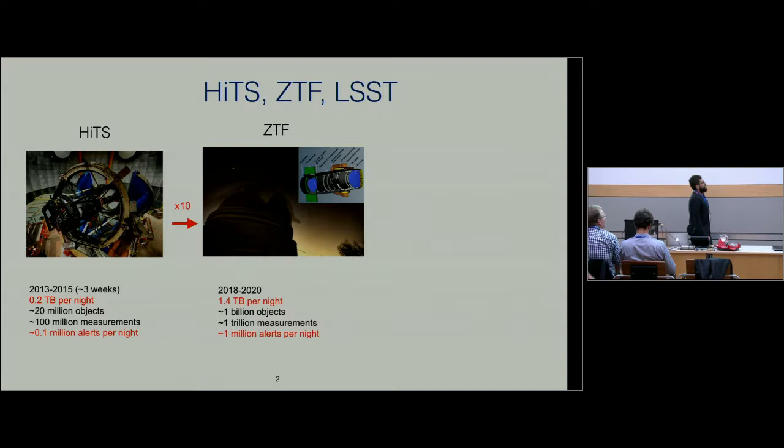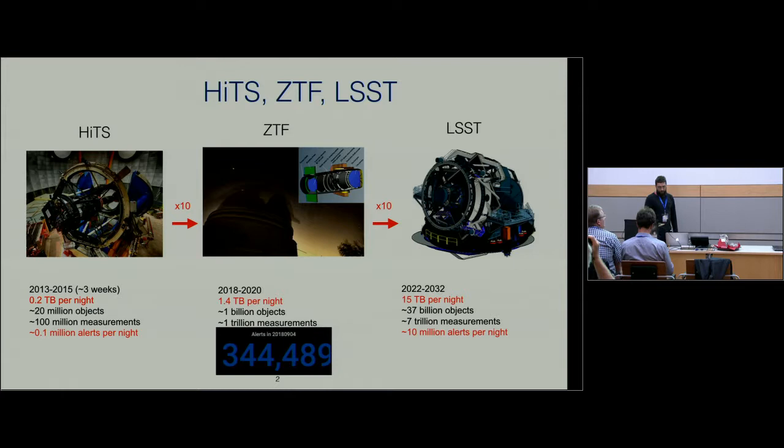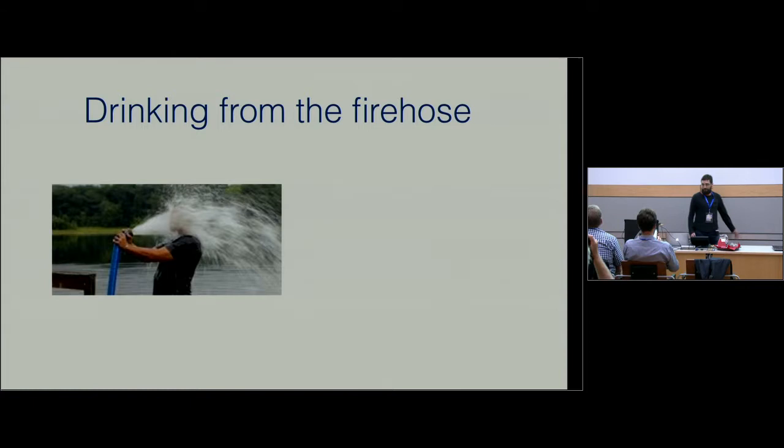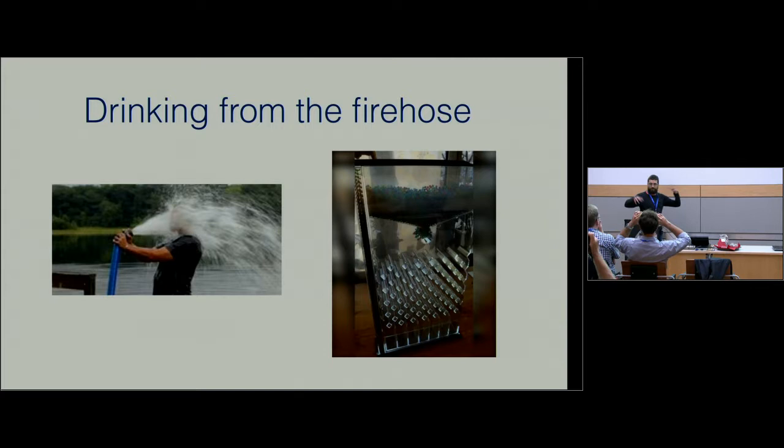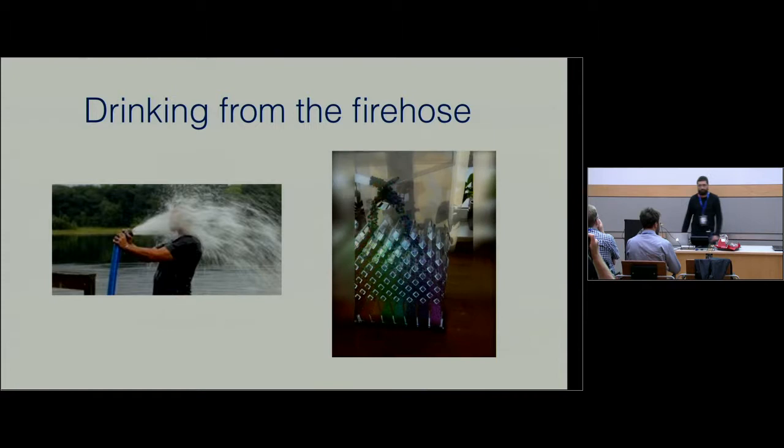Now we have ZTF, which started a couple of months ago observing. They were supposed to give us one million alerts per night, but they are currently giving 344,000 alerts per night. And then we have LSST, from which we will have around 10 million alerts per night. This is a huge flow of data and we don't want to get drowned in it. What we want to do is build a system that grabs all these millions of alerts and starts classifying them automatically and characterizing them.